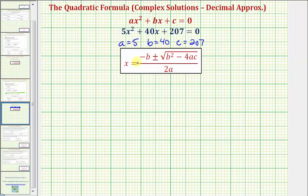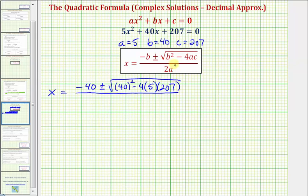And now I'll perform substitution into the quadratic formula. So negative b would be -40, and then we have plus or minus the square root of b², that would be 40², minus 4 times a, a is 5, times c, c is 207, divided by 2 times a, which would be 2 times 5.